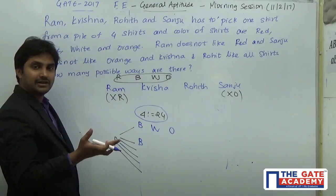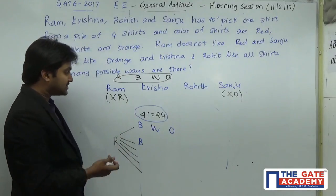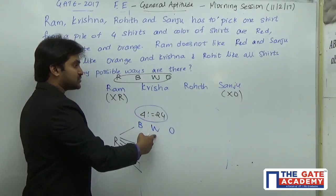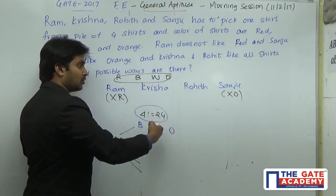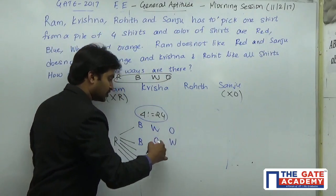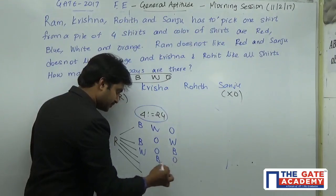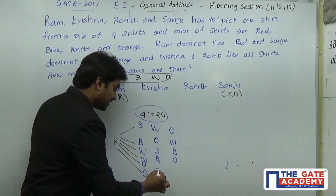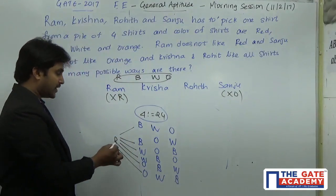First, I write the cases where Ram takes red, so we can later remove them. Ram takes red; then Krishna, Rohit, and Sanju take the remaining shirts. The arrangements for Krishna, Rohit, and Sanju are: Blue-White-Orange, Blue-Orange-White; White-Orange-Blue, White-Blue-Orange; Orange-Blue-White, Orange-White-Blue. That gives us six possibilities where Ram takes red.